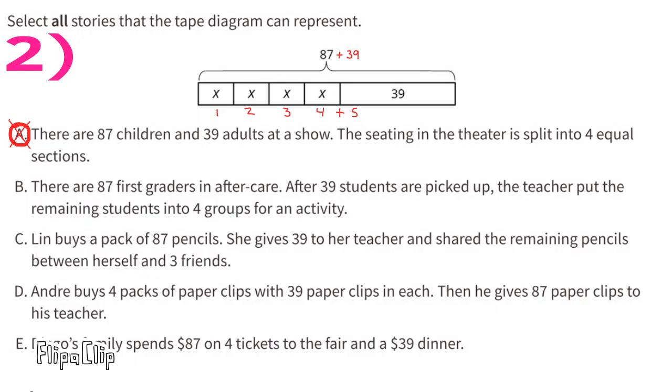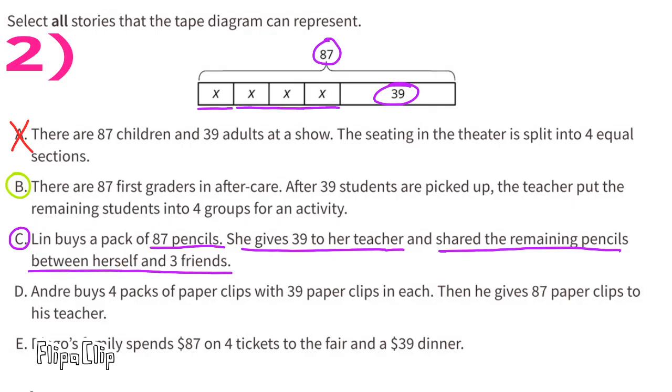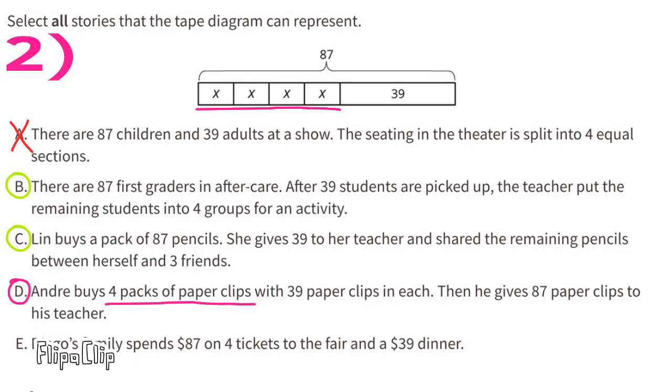B: there are 87 first graders in aftercare. After 39 students are picked up, the teacher put the remaining students into four groups for an activity. That works. C: Lynn buys a pack of 87 pencils. She gives 39 to her teacher and shared the remaining pencils between herself and three friends. That would work. D: Andre buys four packs of paperclips with 39 paperclips in each, then he gives 87 paperclips to his teacher. No, that doesn't work. E: $87 is spent on four tickets to the fair and a $39 dinner. That would work.